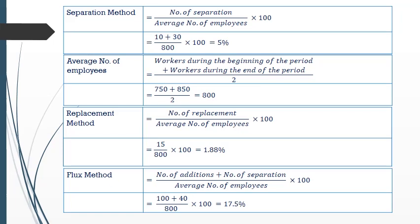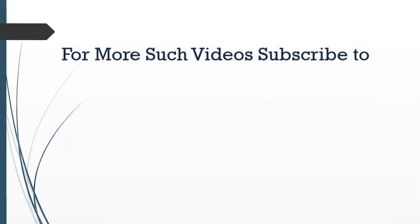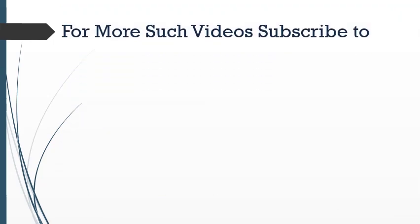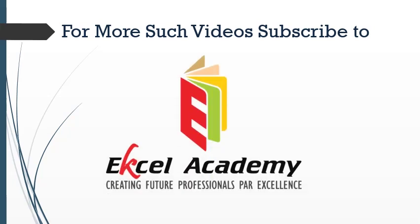Using the labor flux method: number of additions plus number of separations, divided by average number of employees, multiplied by 100. Number of additions is 100 recruited; number of separations is 10 + 30 = 40. So (100 + 40) / 800 × 100 = 17.5 percent. This brings us to the end of the topic.